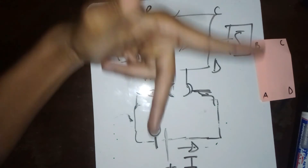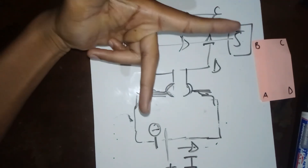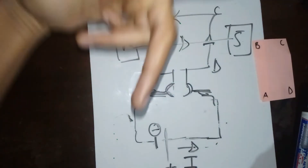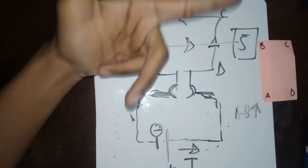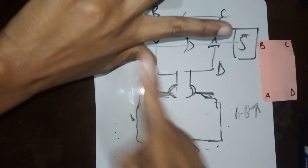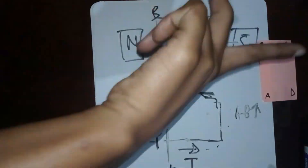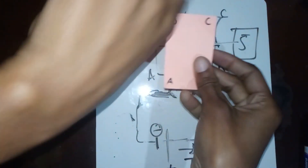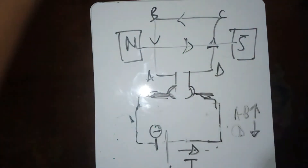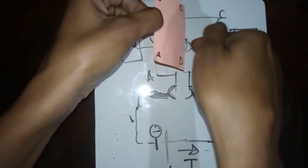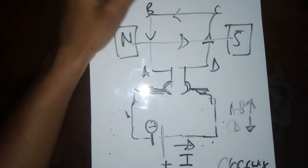We have the direction of the current and the direction of the magnetic field, so we can find the direction the armature will turn using the left-hand rule: FBI — force, magnetic field, current. Focusing on AB: the current from A to B is moving in this direction, and the magnetic field goes from north to south. Applying the rule, AB is going up. For CD, it's the reverse — CD is going down. So if AB is going up and CD is going down, this thing is rotating clockwise.